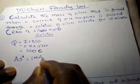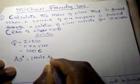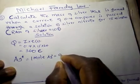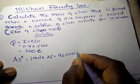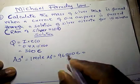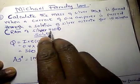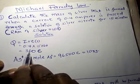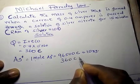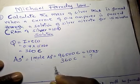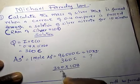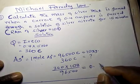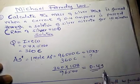The mass of silver: remember silver is Ag⁺, it has a valency of 1. So 1 mole of silver ions equals 96,500 coulombs, and this equals the RAM. The RAM of silver is 108 grams. For 360 coulombs, the mass is 360 times 108 divided by 96,500, which gives us 0.4 grams of silver produced.